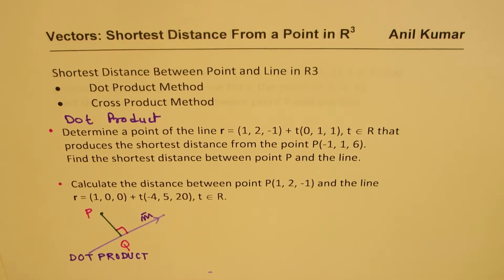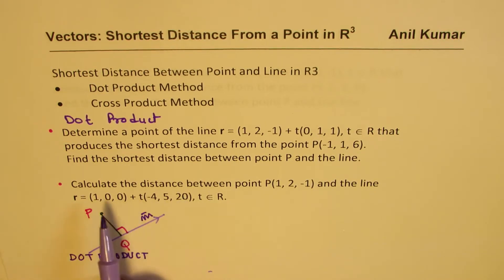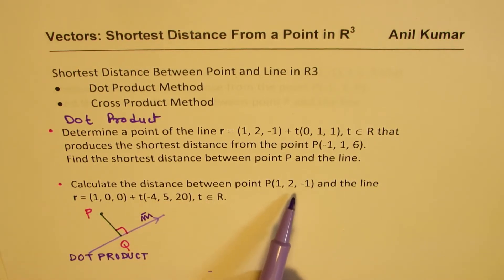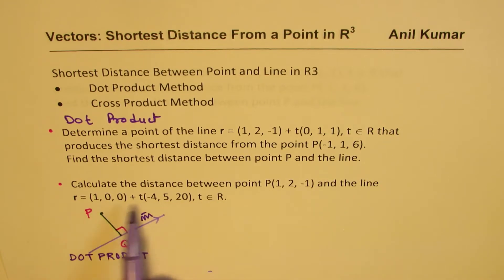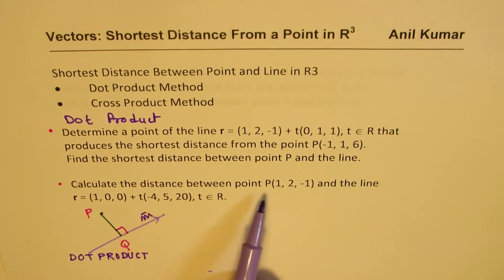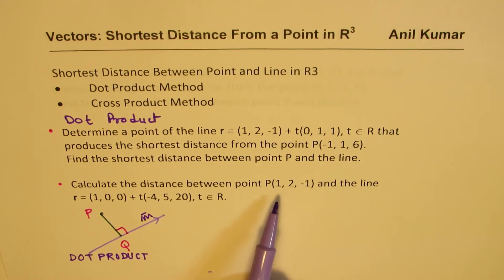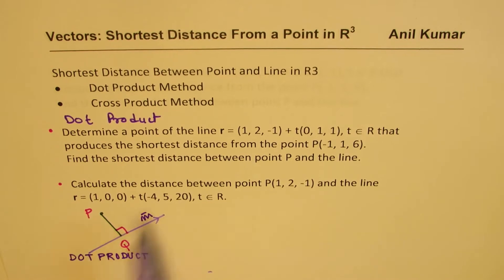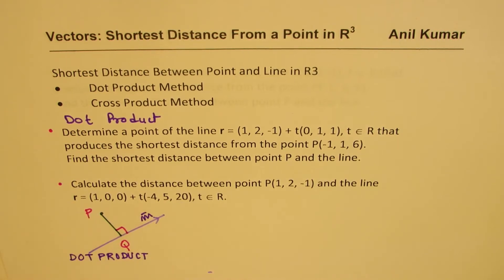Now look at the second question. It says calculate the shortest distance between the point and the line. When it says calculate the distance, it automatically means shortest distance — from a point which is external. If it is on the line, you'll get 0 as your answer. In that case, you have a choice: you could use the dot product, or you could use the cross product.